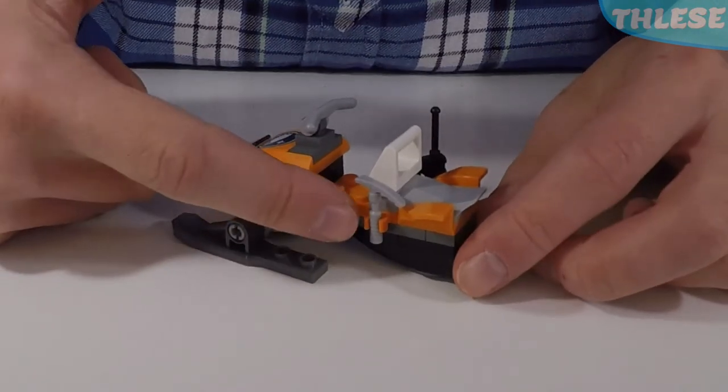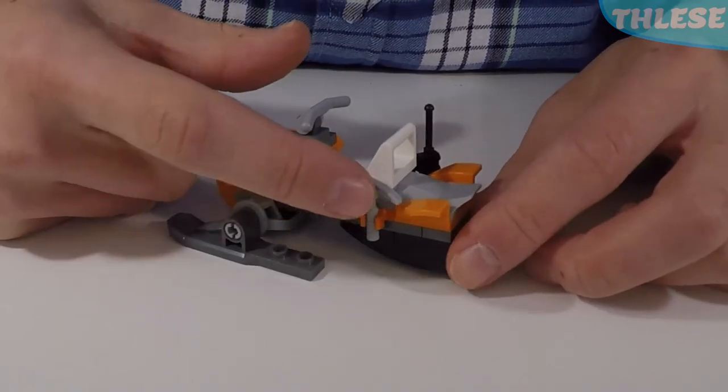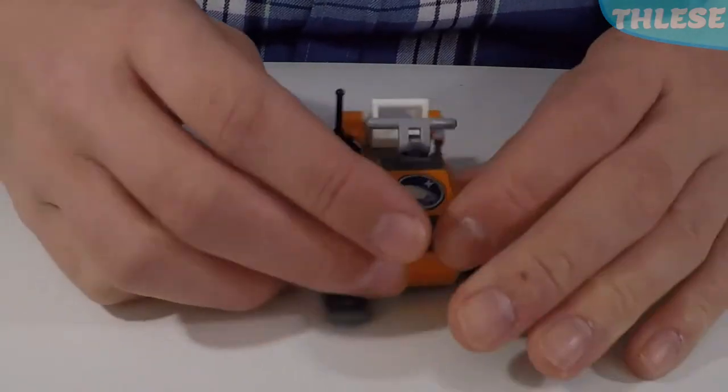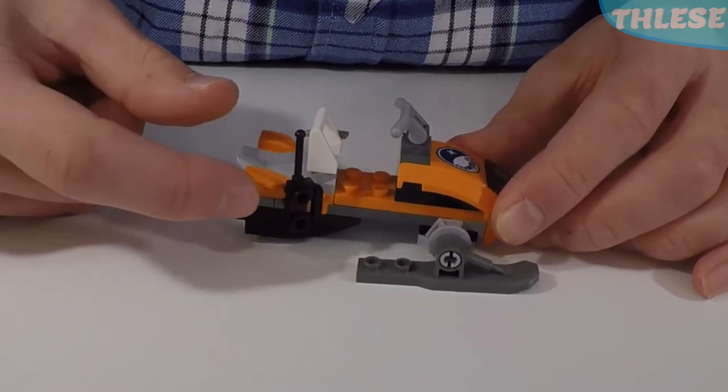So on the sides we have some clips with accessories. On this side we have an ice pick in light grey, and on the other side we have a handheld radio.